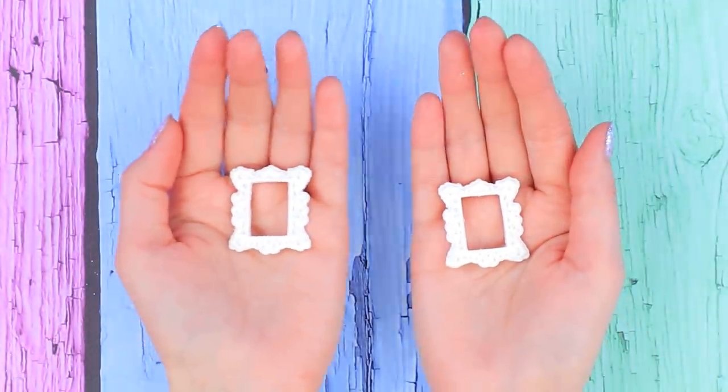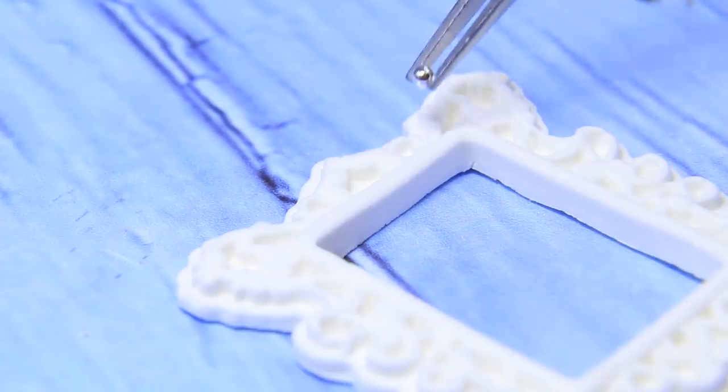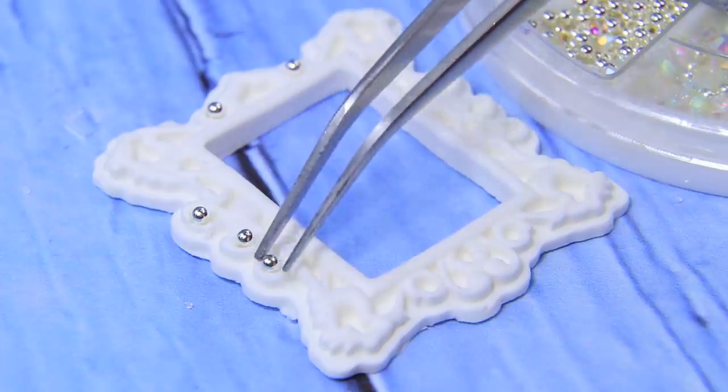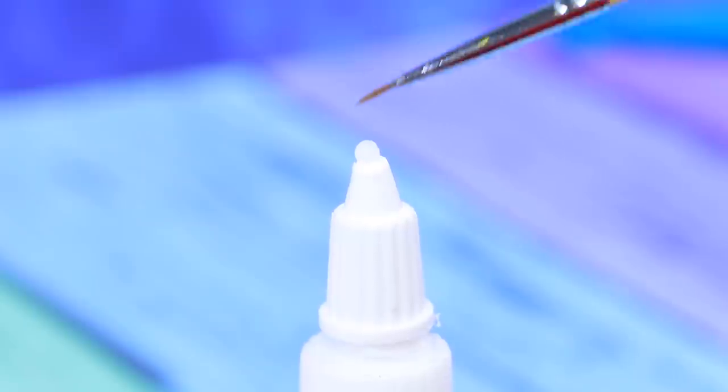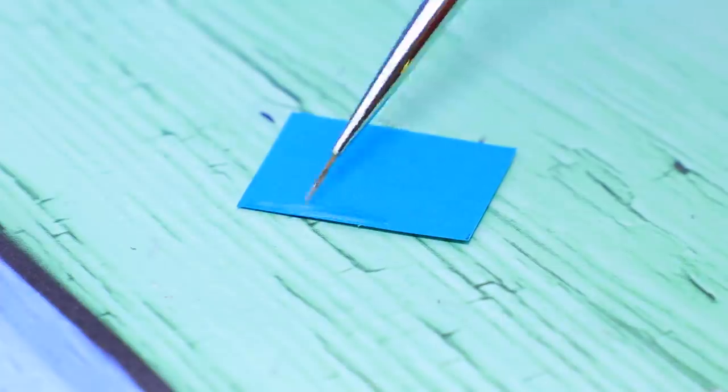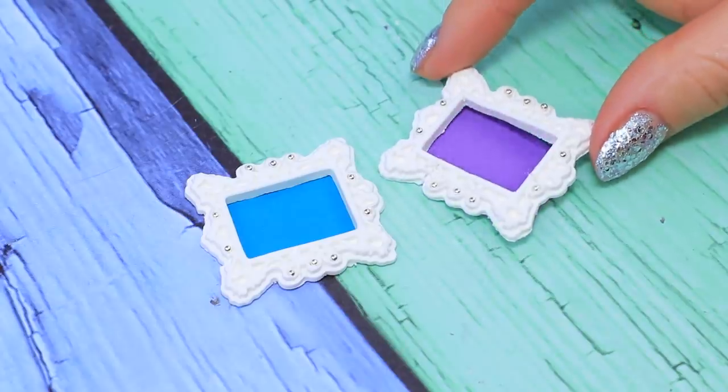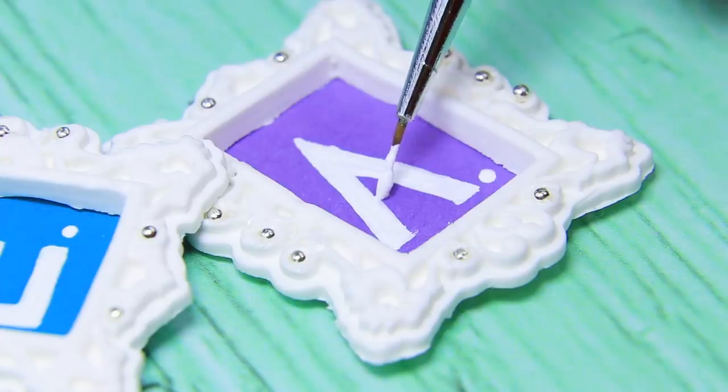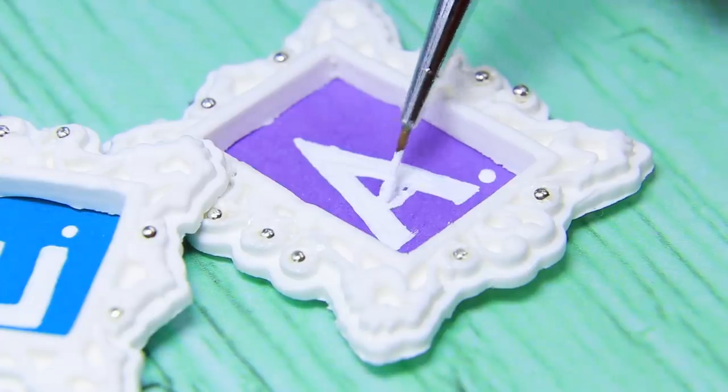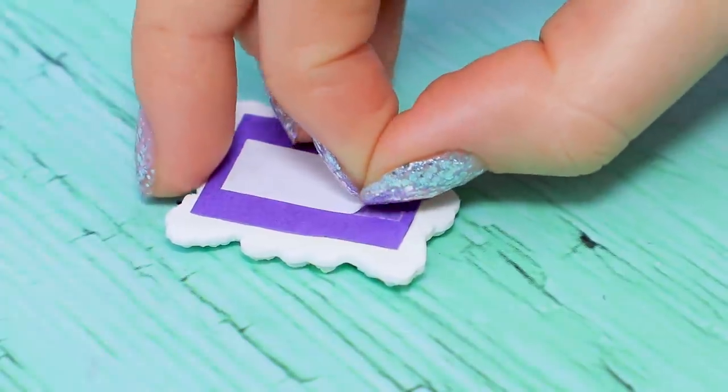We have an idea on how to use these adorable frames! Decorate them with nail beads. Use blue cardboard for Elsa and purple for Anna. Coat the edges with white glue. Use a brush. Outline the first letters of the girls' names with white acrylic paint. Fasten the frames to the walls using double-sided tape.